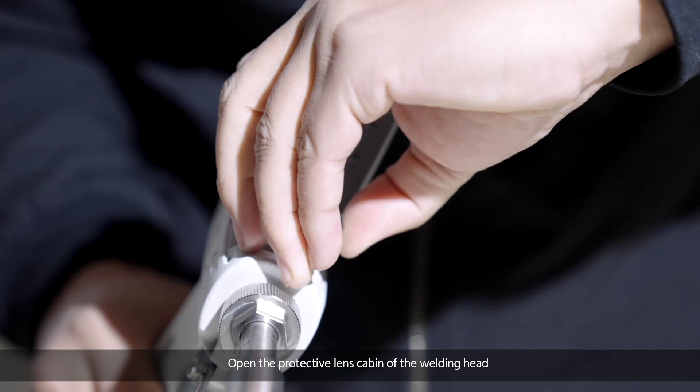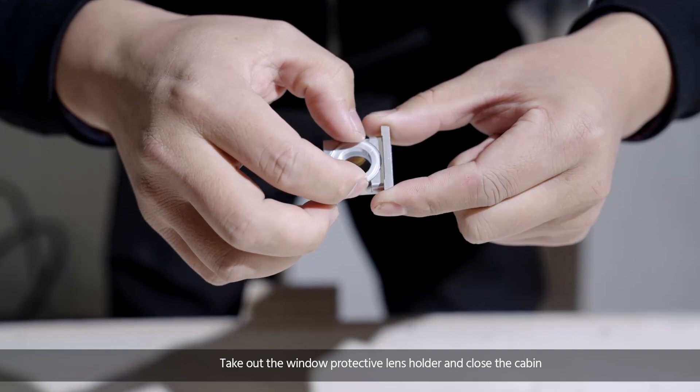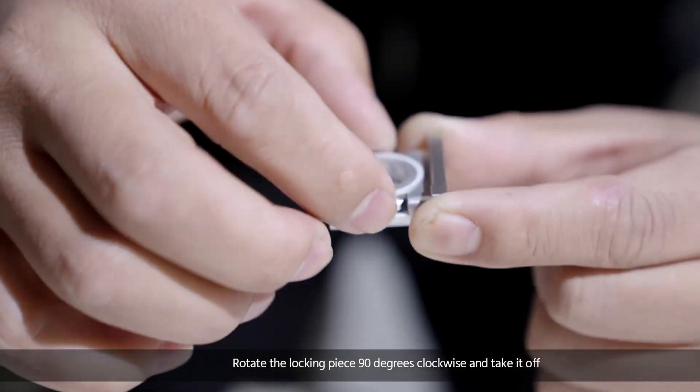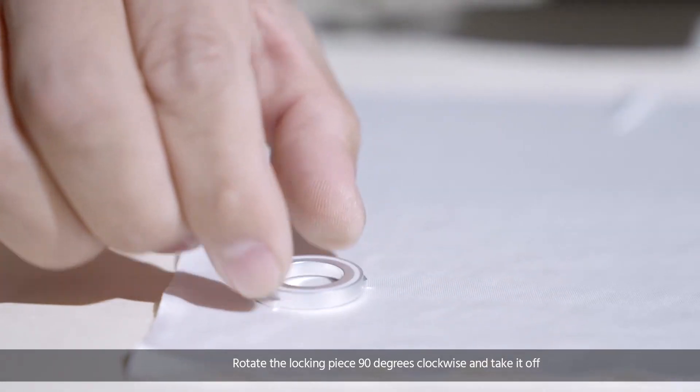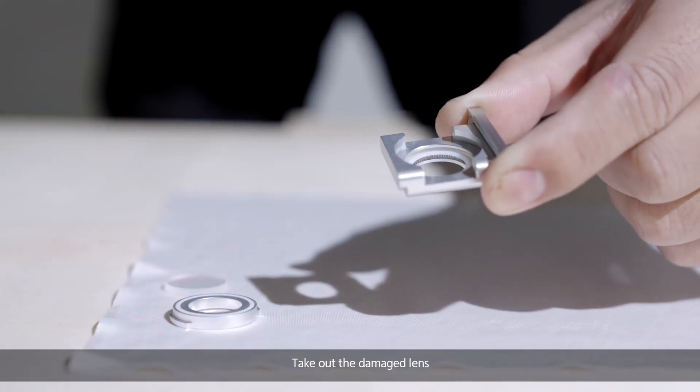Open the protective lens cabin of the welding head. Take out the window protective lens holder and close the cabin. Rotate the locking piece 90 degrees clockwise and take it off. Put the piece on the dust-free cloth and take out the damaged lens.